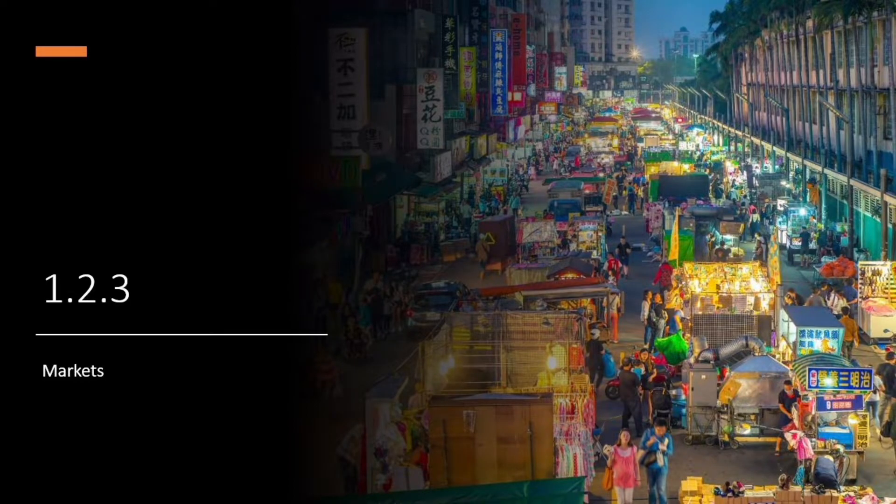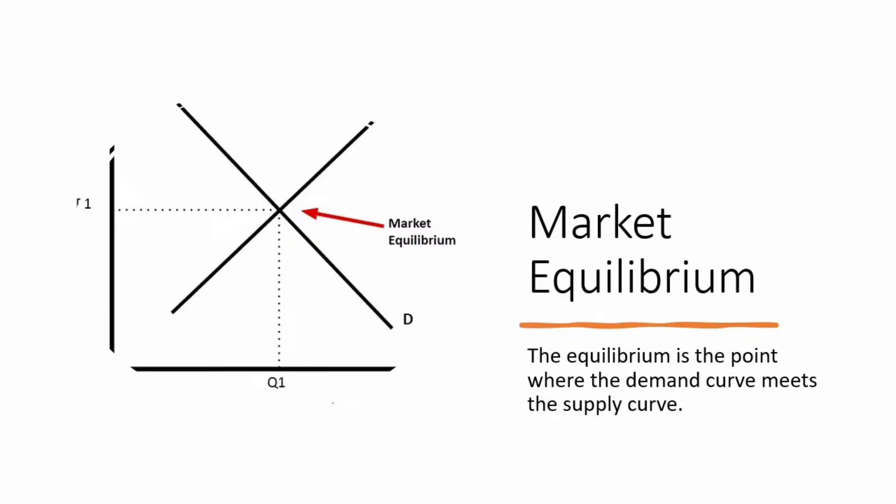1.2.3 Markets. Market equilibrium. The equilibrium is the point where the demand curve meets the supply curve.